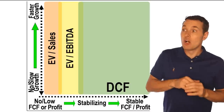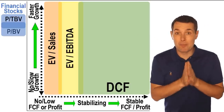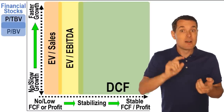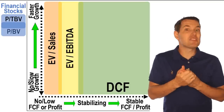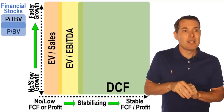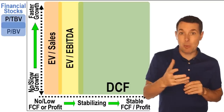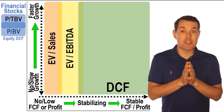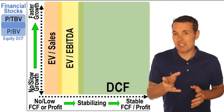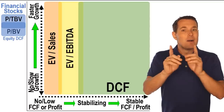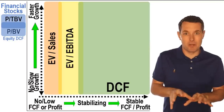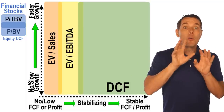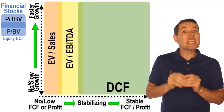For financial stocks, we typically would use something like price to book value or price to tangible book value. If we have a financial stock — a bank, an insurance company, or many types of investment companies — these are typically better valuation methods. If you want a more advanced way to value banks and financial stocks in general, something like equity discounted cash flow is a good valuation method to use. It's not the same as standard discounted cashflow — it's a similar concept but the process is different.